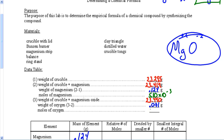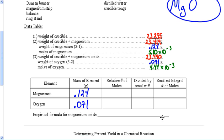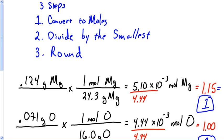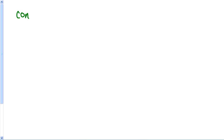But anyway, that's what we're doing. Let's go back and finish filling out that data table. So the moles I did: for me it was 5.10 times 10 to the negative third; this one was 4.44 times 10 to the negative third. When I divided I got 1.15 and 1.00. When I rounded off I got 1 and 1, which makes my answer MgO. And I'm actually done almost with this lab.